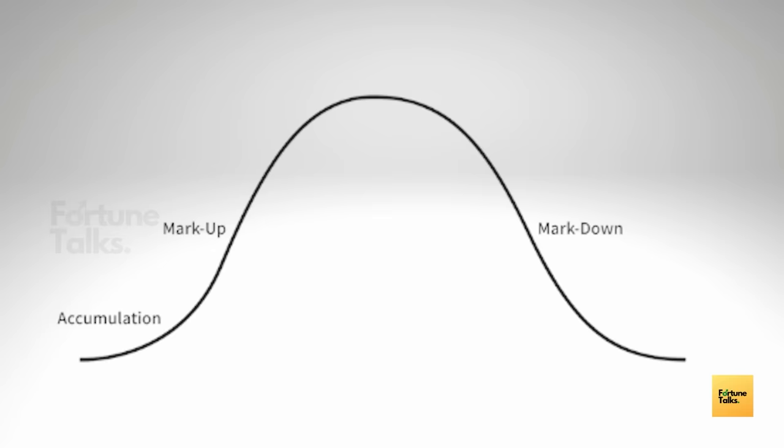Moving on to the uptrend or advancing phase. This stage usually occurs after the price breaks out of the accumulation phase. After building up their positions, the institutions take the market higher, so there is a bullish sentiment in the market. The institutions will not book profits anytime soon, so the uptrend can last anywhere from months to even years. It is during this phase that trend traders make a lot of profit.